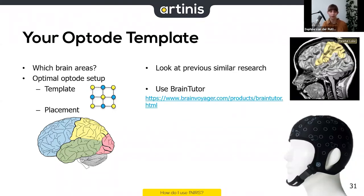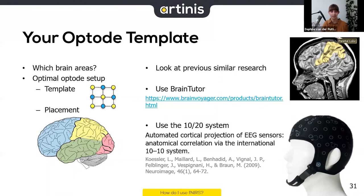If the paper mentions a brain area and you don't know exactly where it is on the head, you can use the free software Brain Tutor — we'll send the link in the email after this webinar. You can also use the 10-20 system; our cap has these 10-20 locations printed on it, and you can use reference papers to look up which 10-10 position is associated with certain brain areas.